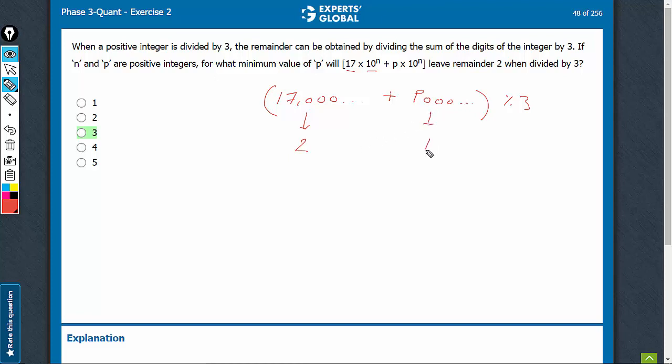What should be the minimum value of p so that 2 plus p... Imagine the sum of digits is p. To find the remainder with 3, we just need to divide p by 3. So what should be the minimum value for which 2 plus p when divided by 3 will lead to remainder 2? One value can be 0, but it's given that p is a positive integer. The next such value will be 3, and therefore the right answer here is 3.